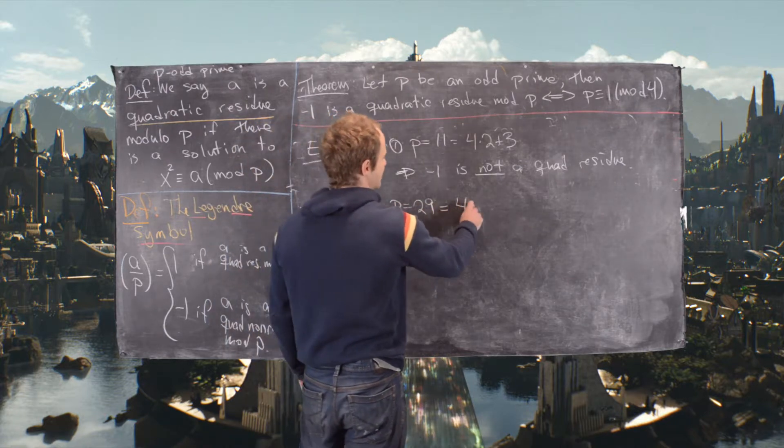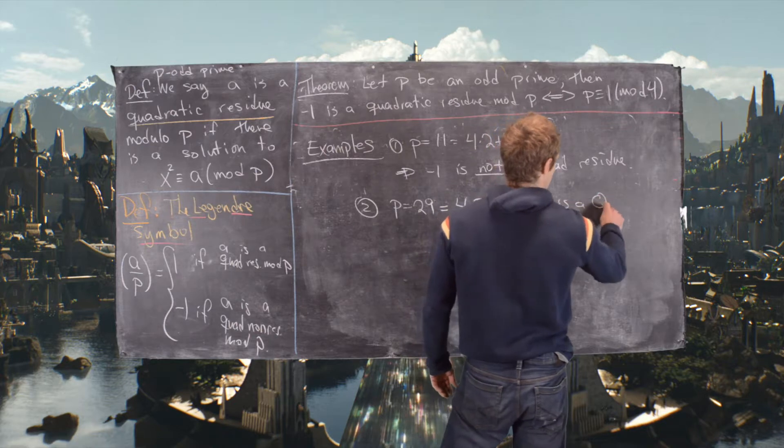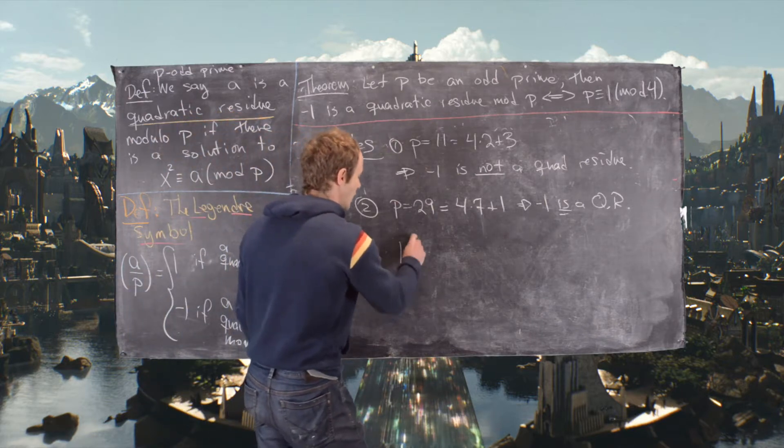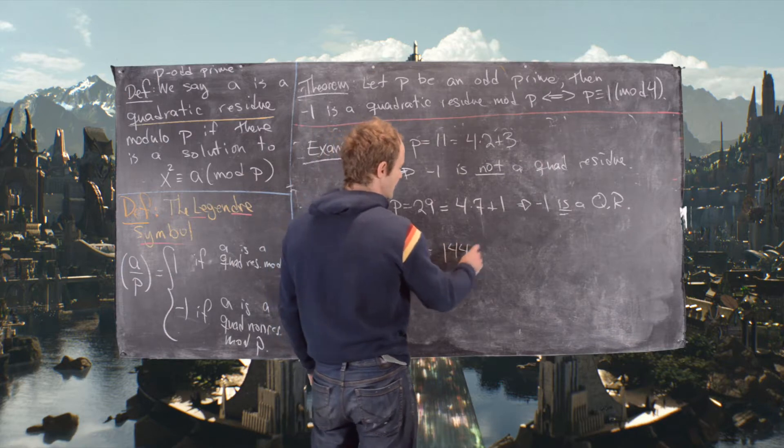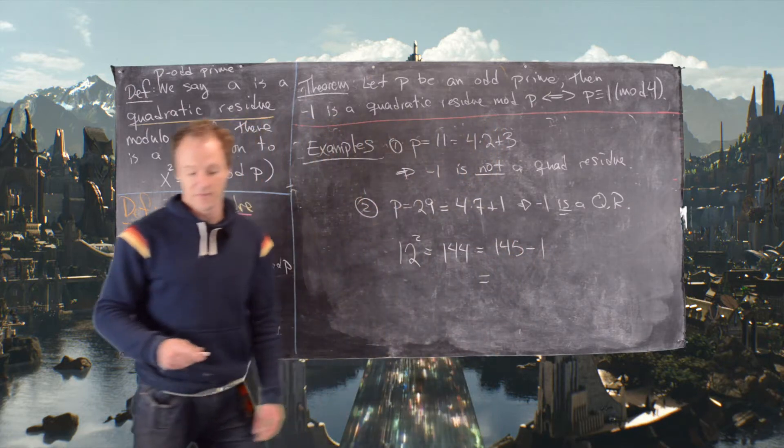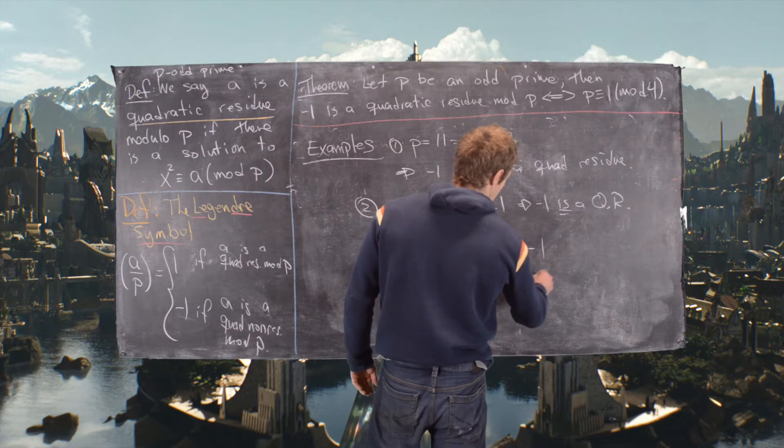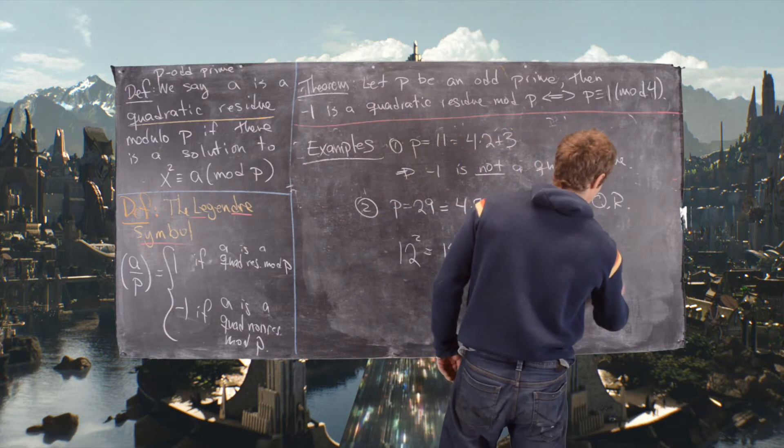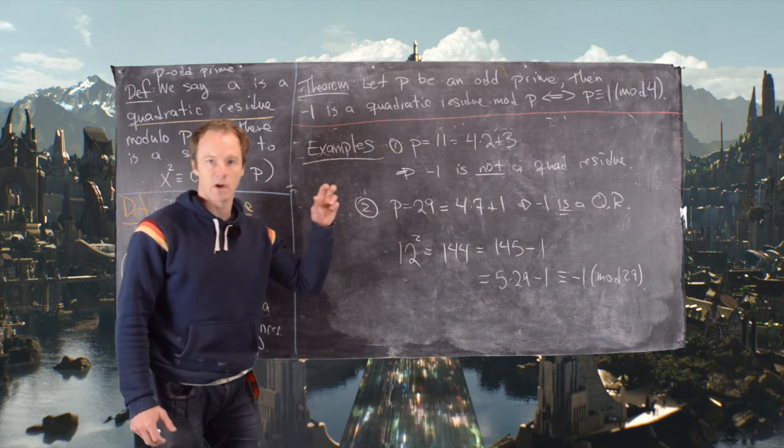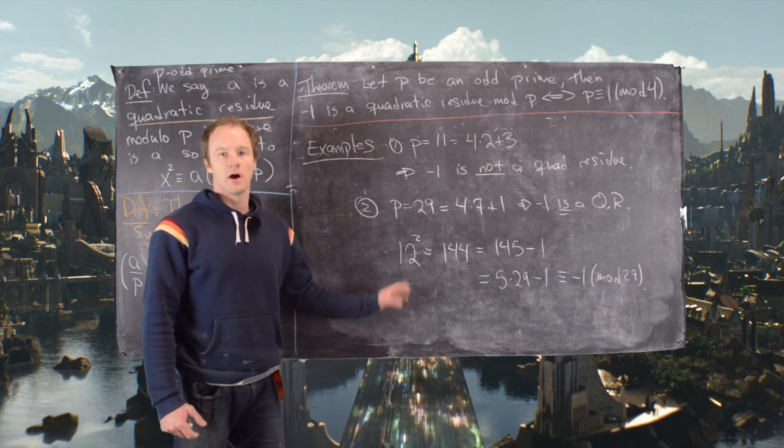So now let's look at another example. Let's look at p equals 29. So notice that's 4 times 7 plus 1, so that tells us that negative 1 is a quadratic residue in this case. And in fact what we can notice is that 12 squared equals 144, which equals 145 minus 1. And furthermore, 145 is exactly 29 times 5, so 5 times 29 minus 1. So this is congruent to negative 1 mod 29. So not only did we say that it is a quadratic residue, but in this case we could say that the square root of negative 1 is 12, or i mod 29 is 12. Okay, good. So this is the end of the video.